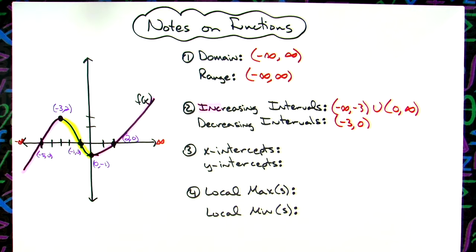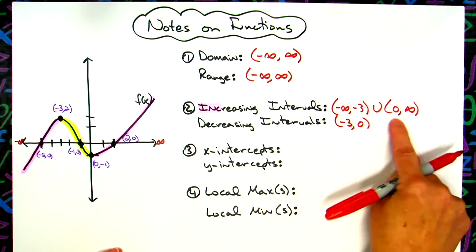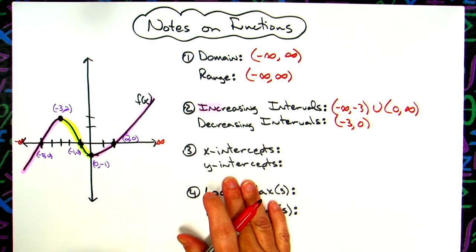X and y intercepts. These are ordered pairs. I know this looks like an ordered pair, but it's not. Those are intervals. When I write them here, it's going to look the same way, but they are actually the points on the graph.